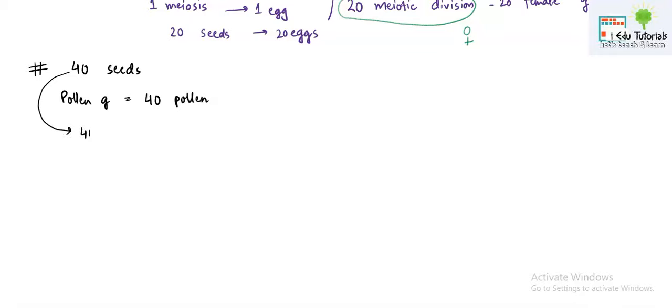We will divide this value of 40 by 4 and this will give us the answer of 10 meiotic divisions. Means when 10 meiotic divisions will happen, then 40 pollens they will be received.